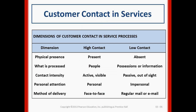In a service process, the service dimension requires you to be present — if you're not there, the customer doesn't feel they're getting good service, so there should be a high amount of contact. When customers are being processed, such as at a doctor's office, you need contact intensity: you need to be not only active but visible.